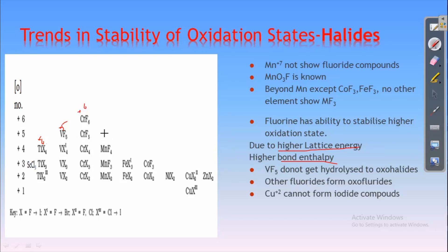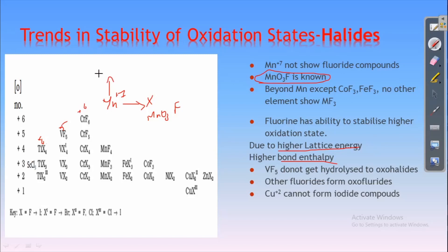When we talk about manganese, manganese has a higher oxidation state of +7. Manganese at +7 oxidation state will not form a fluoride compound. Instead, it will show oxofluoride compounds — that is MnO₃F — or oxide compounds, that is Mn₂O₇, at the +7 oxidation state.